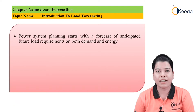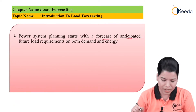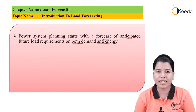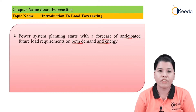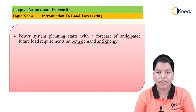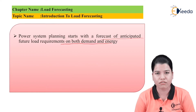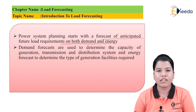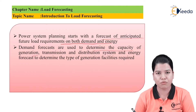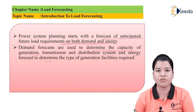The main reason to start power system planning is it starts with the forecast of the anticipated future load requirement on both demand as well as energy. Basically, load forecasting can be stated as forecasting or anticipation of the future demand on load on energy as well as demand on the power system. By using forecasting techniques, we can estimate the future demand on the power system and accordingly provisions can be made for increasing generation. The demand forecasts are used to determine the capacity of generation, transmission, and distribution systems, and the energy forecast is used to determine the type of generation facilities that will be required.